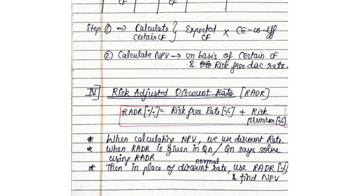Finally, there is the risk adjusted discount rate method. Risk adjusted discount rate is the risk-free rate plus the risk premium. In a question where risk adjusted discount rate is mentioned, instead of using the normal discount rate, use the risk adjusted discount rate to find out your NPV — the same way you used the risk-free rate in the certainty equivalent method. So this was about risk analysis and I hope it would be easier for you to now understand the notes.